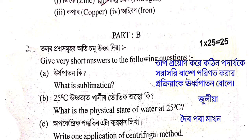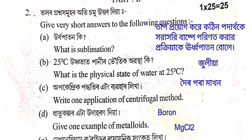Urdhah patan ki? Sublimation is the process by which a solid substance is directly converted to vapour without passing through the liquid state — ta prorik kori kothin podartha ke liquid abastha hara kori baspot porinat kora prokriya ke urdhah patan bula hoi. What is the physical state of water at 25 degree Celsius? The answer is liquid (julia).